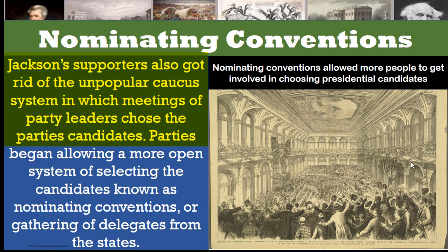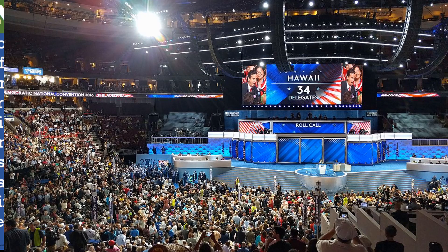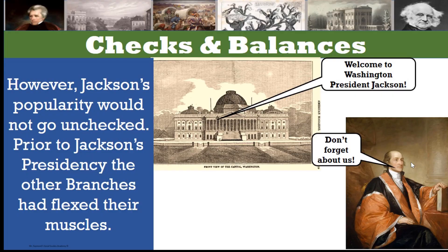Jackson's supporters also got rid of the unpopular caucus system, in which meetings of party leaders chose the party's candidates. Parties began allowing a more open system of selecting candidates known as nominating conventions, which is a gathering of delegates from the states. This is how parties have chosen their candidates ever since. However, Jackson's popularity would not go unchecked.